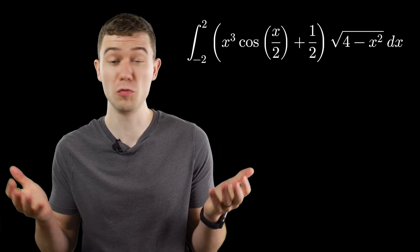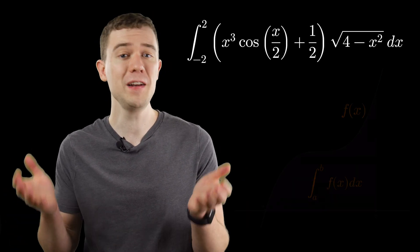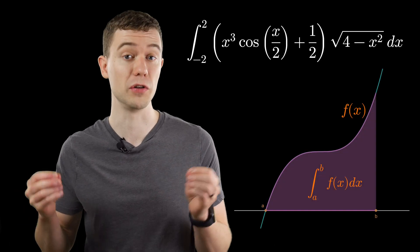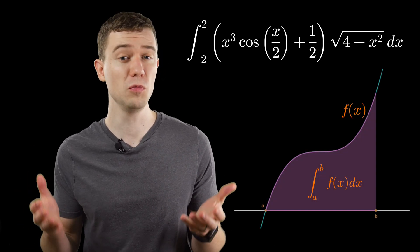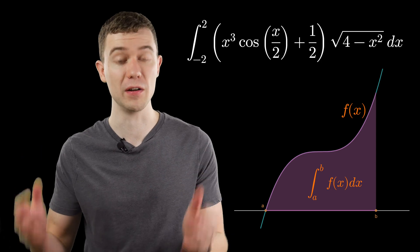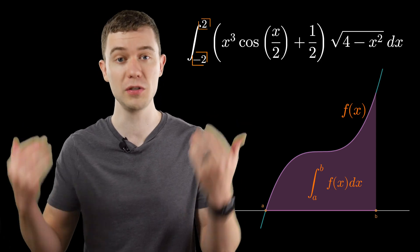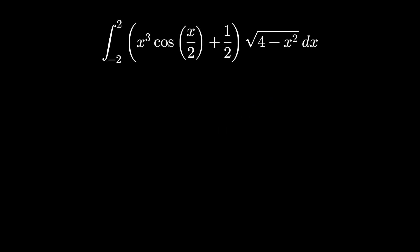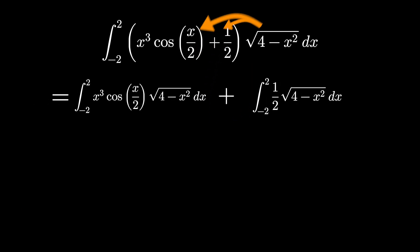So what does this definite integral really represent? Well, definite integrals give us the area under the curve of this function. So we're just interested in the area under this function from minus 2 to 2. And really, we can think of this as two separate functions if we do this distribution. So what's the area under the curve from minus 2 to 2 for these two functions?